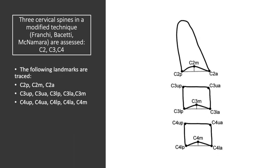We are looking at the inferior portion of the body of the second cervical spine. I need to identify the most posterior point, C2P, the deepest point, C2M, and the most anterior point, C2A.